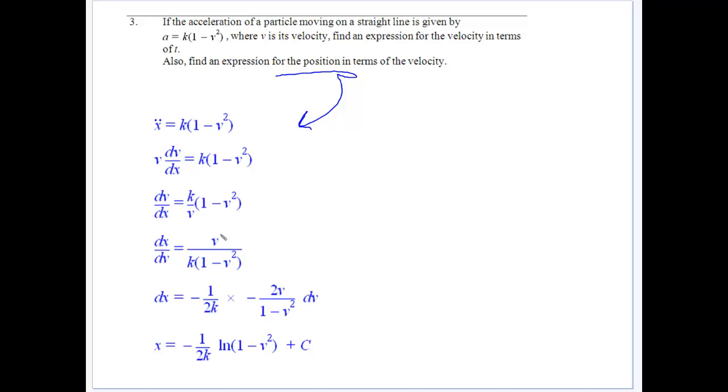So we manipulate to get dx equals minus 1/2k times minus 2v over 1 minus v squared. So we can really see our log function there. We've got our constants out. So that just integrates to log of 1 minus v squared, and the constant stays out the front plus a constant c.